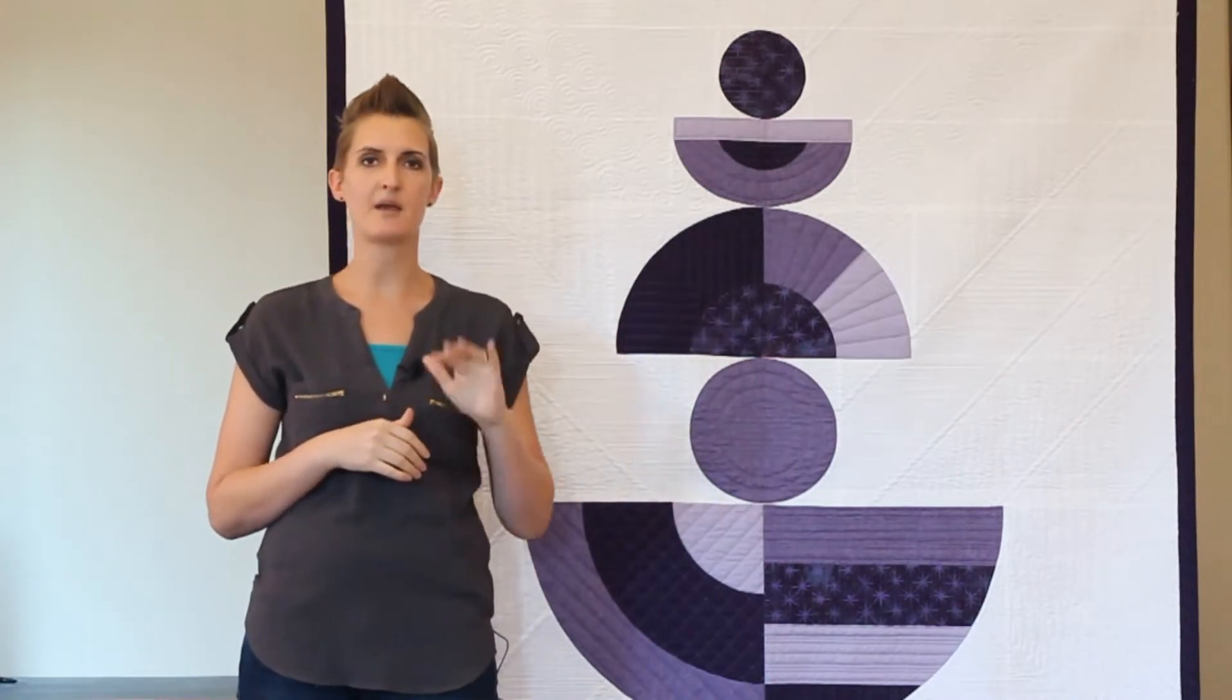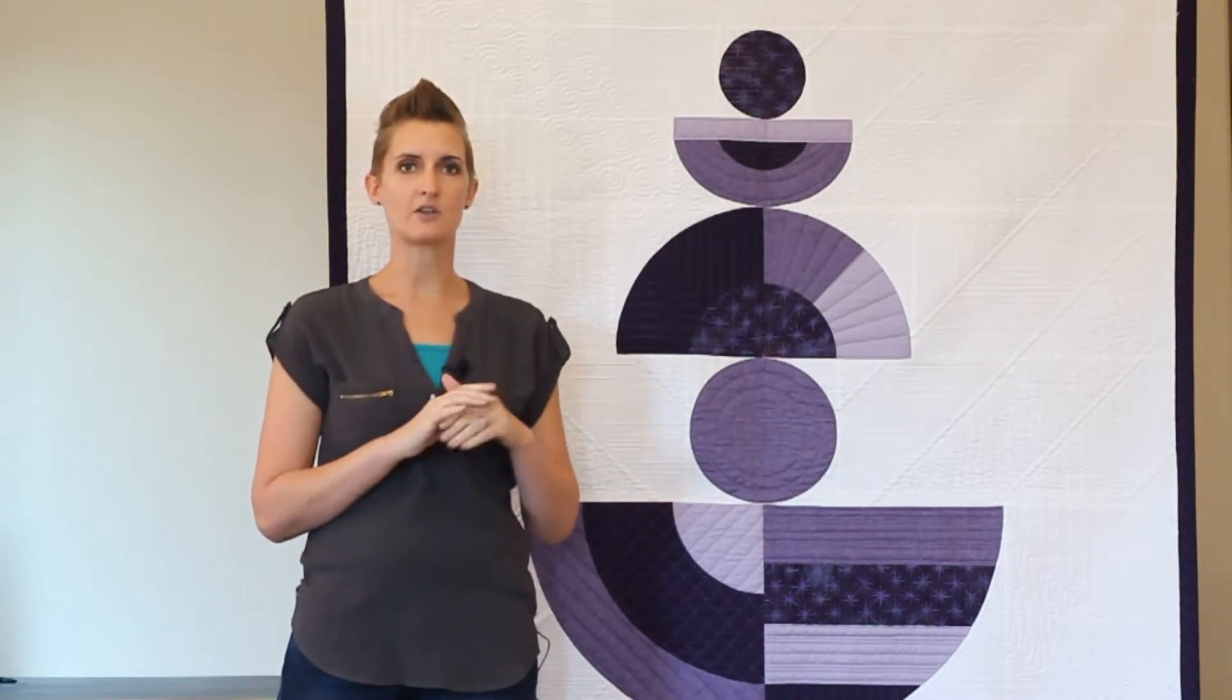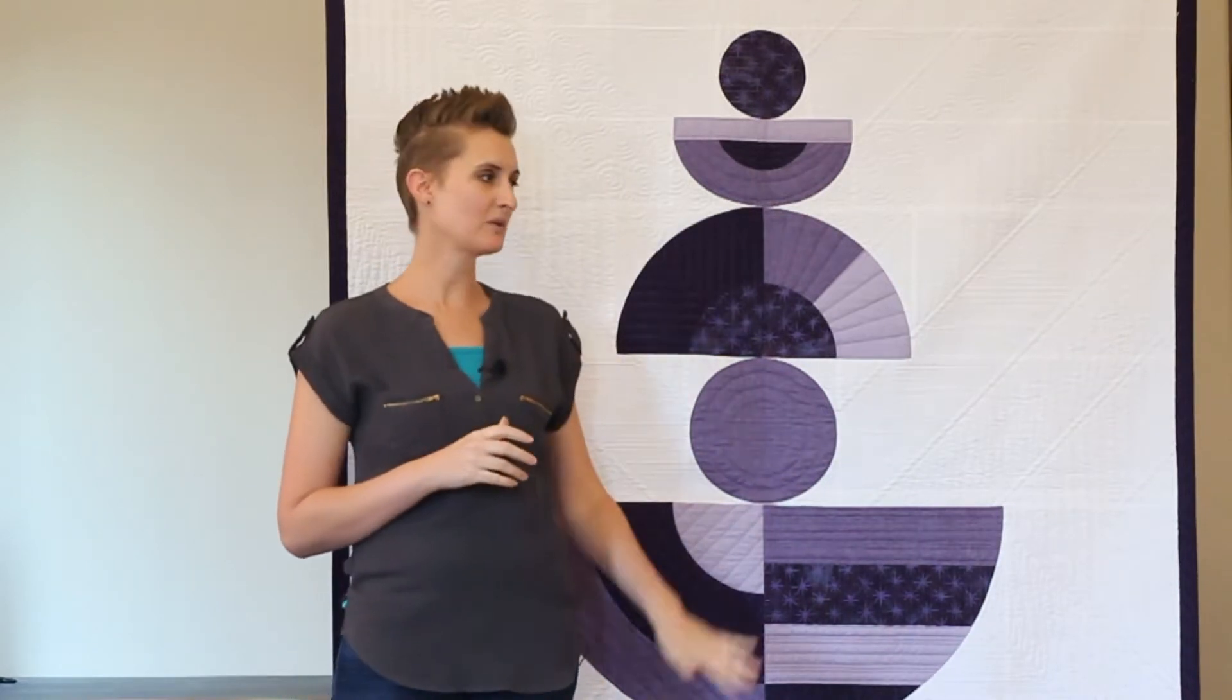I recommend having somebody hold it or putting it up on a design wall or just getting it vertical so that when you take the picture you can get as straight on as possible. If you put it on the floor, you're going to end up with trapezoids and it's kind of hard to fit shapes into those spaces. Try to take a photo straight on with your phone, print out a picture, and go ahead and print out a couple of them. That way if one isn't going well, you don't have to worry about erasing everything. You can just toss it and start over.